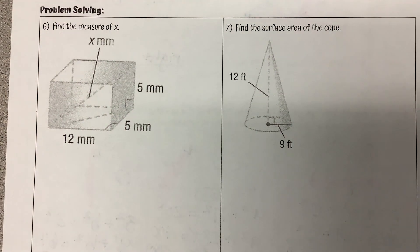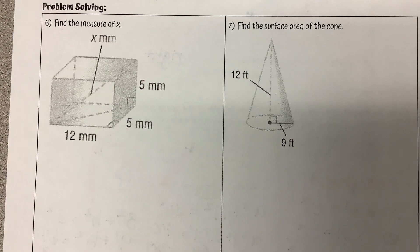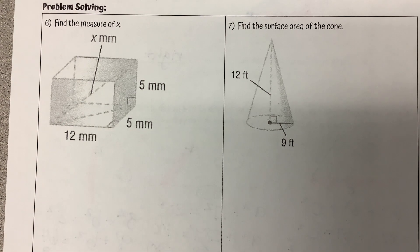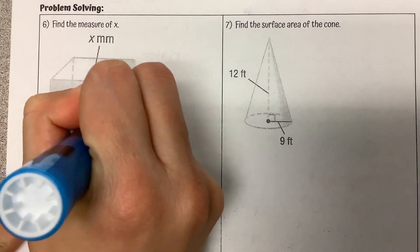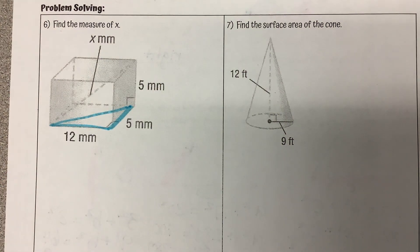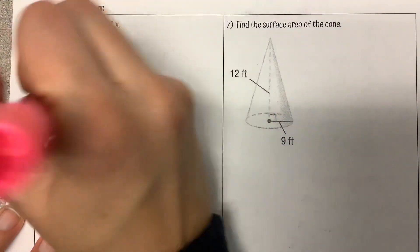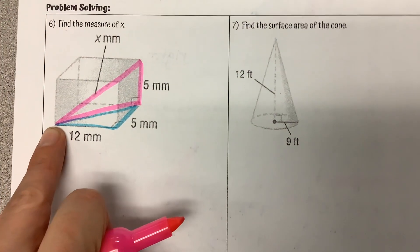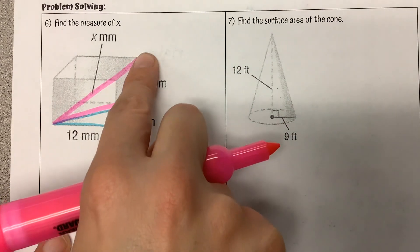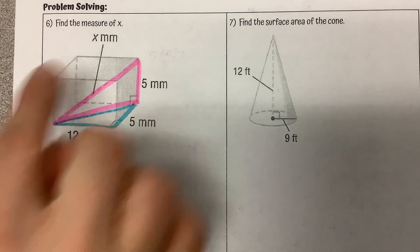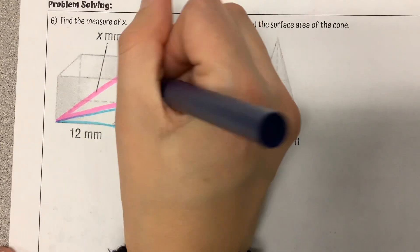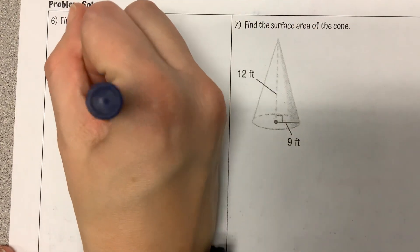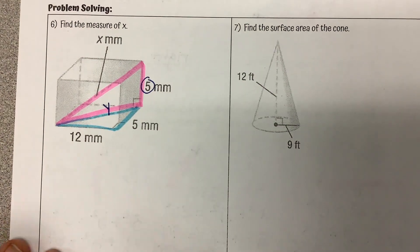Now for some problem solving, going back to the volume and surface area units — thinking back to those formulas. Find the measure of X. What we have to look at here is we kind of have two triangles. I have a triangle on the bottom of my shape — that's not where X is. My X value is in this second triangle up here, essentially from the front left corner to the back right on the top. If I need this X value, I need to know both of these sides, but I only know five. I don't know this other measure, so I'm going to call it Y. I need to solve for that value first in order to find X.